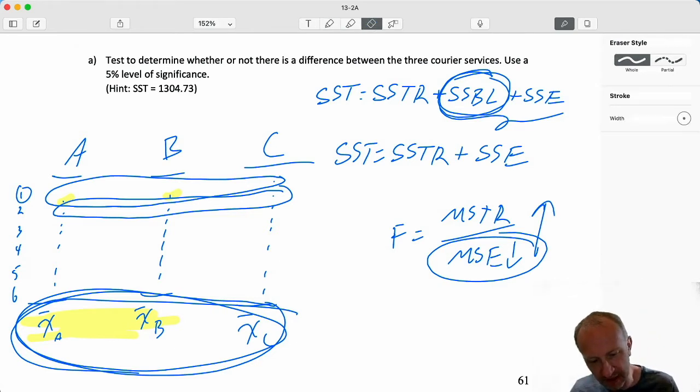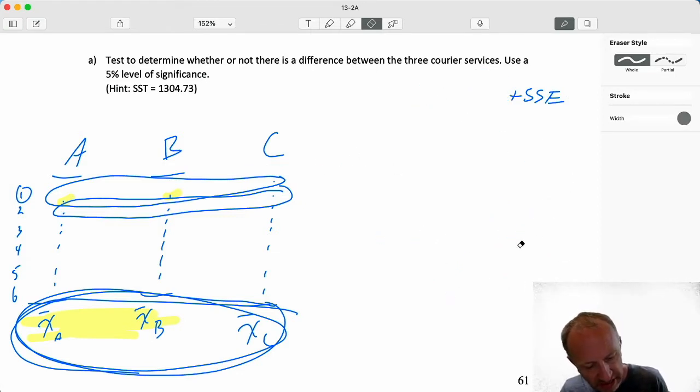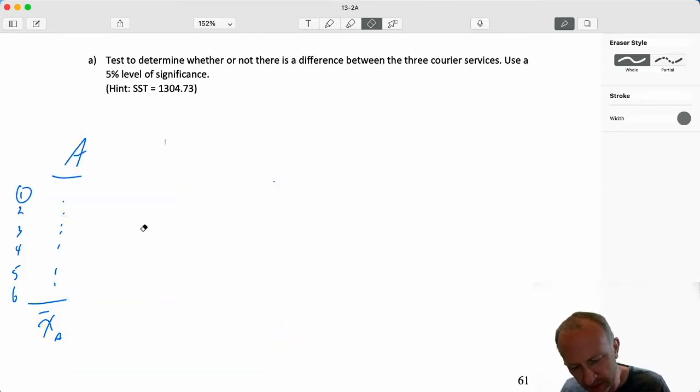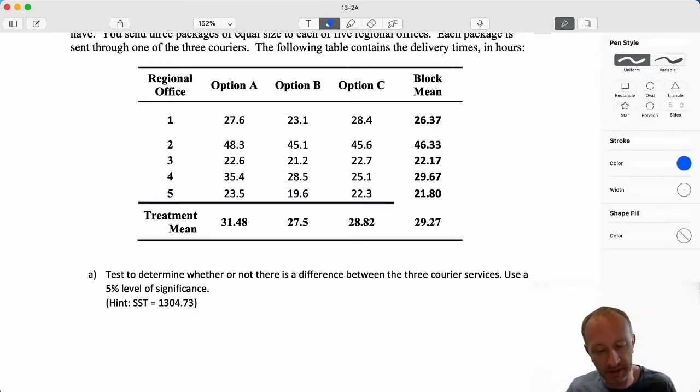Okay, so that's enough on that. I could talk for an hour, I'm sure, just on the kind of underlying theory of the randomized block. So let's just get into how to do this problem. You'll find it's very, very similar to the completely randomized ANOVA. There's just that one additional source of variation.